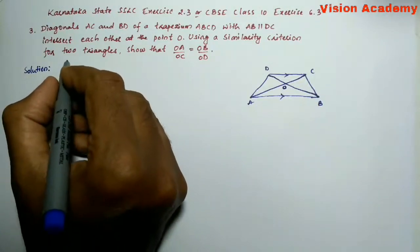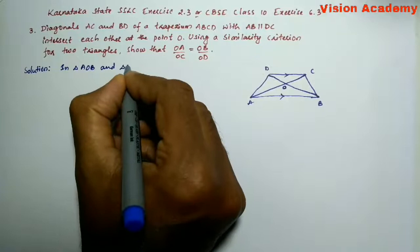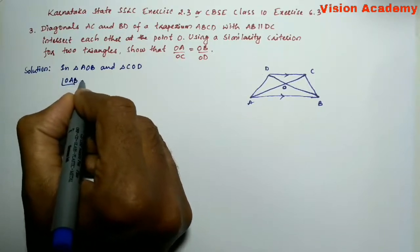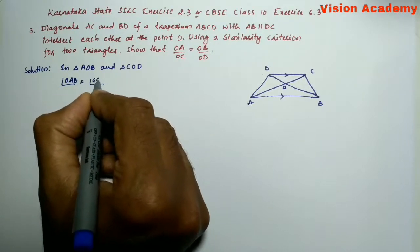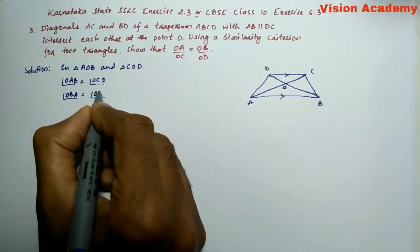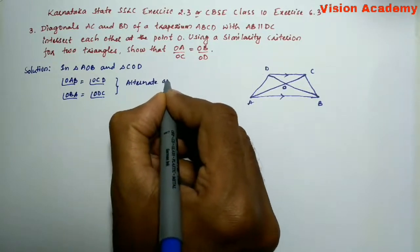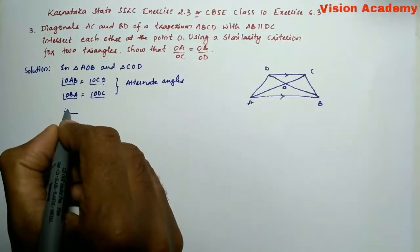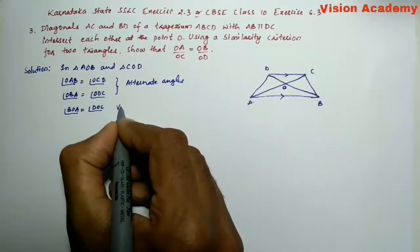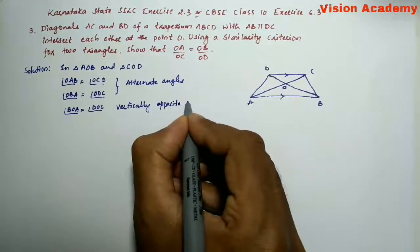Now, in triangle AOB and triangle COD, angle OAB is equal to angle ODC. Both of these are alternate angles. Similarly, angle AOB is equal to angle COD because they are vertically opposite angles.